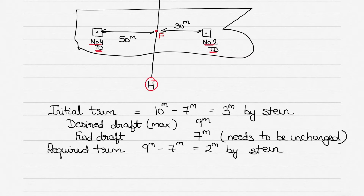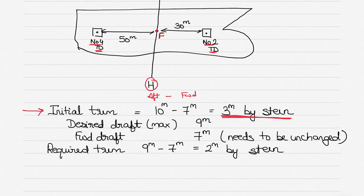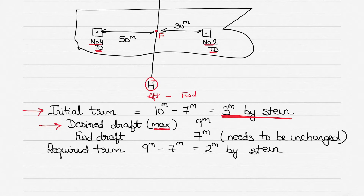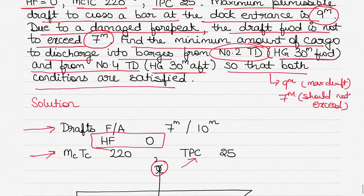Number 2 'tween deck is 30 meters forward and Number 4 'tween deck is 30 meters aft of the center of rotation. Based on the initial drafts, the initial trim is aft draft minus forward draft: 10 meters minus 7 meters equals 3 meters. The trim is 3 meters by stern because the aft draft is greater than the forward draft.